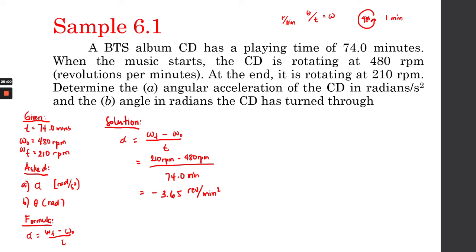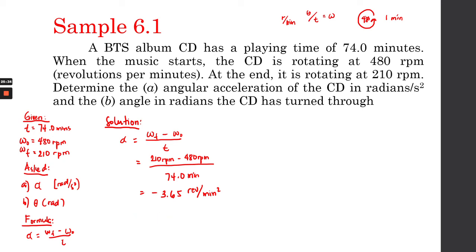We need to convert this to radians per second squared. We know one revolution equals 2 pi radians, or 6.28 radians. We also need to convert minutes to seconds: 1 minute equals 60 seconds, and since the unit is minutes squared, we square 60 to get 3,600.